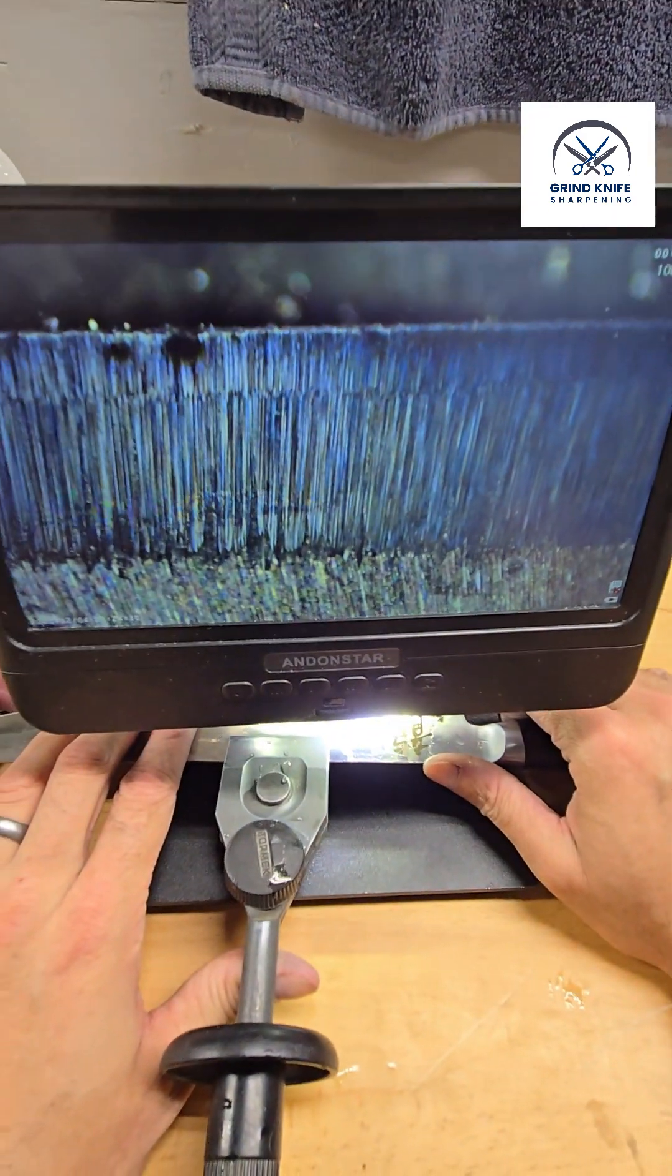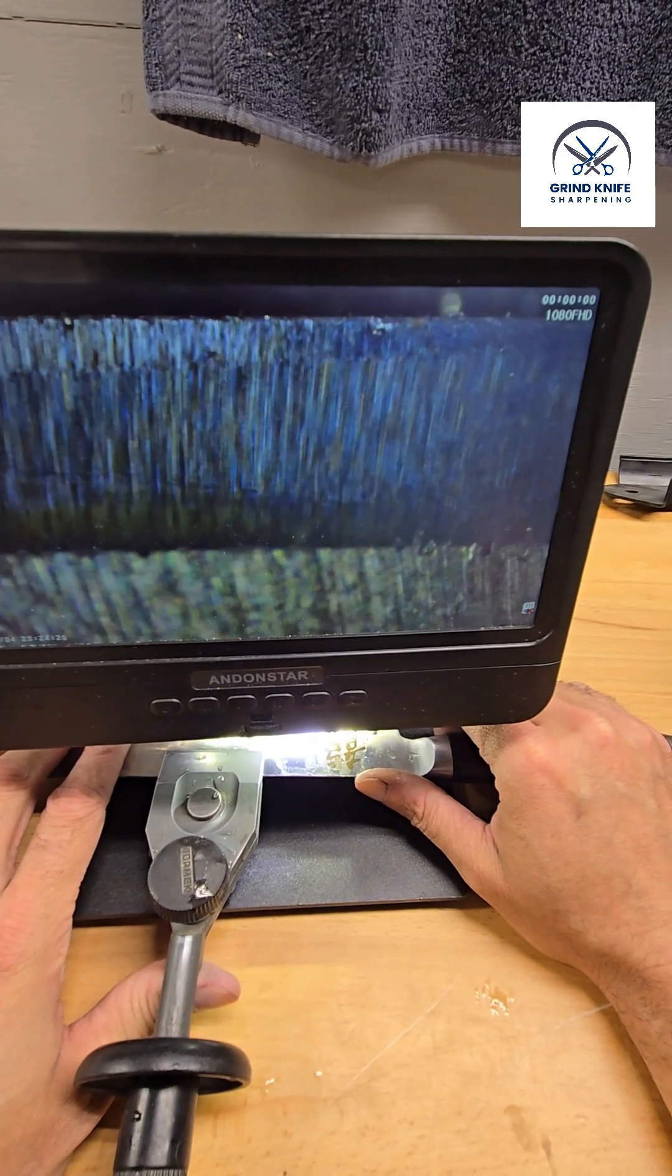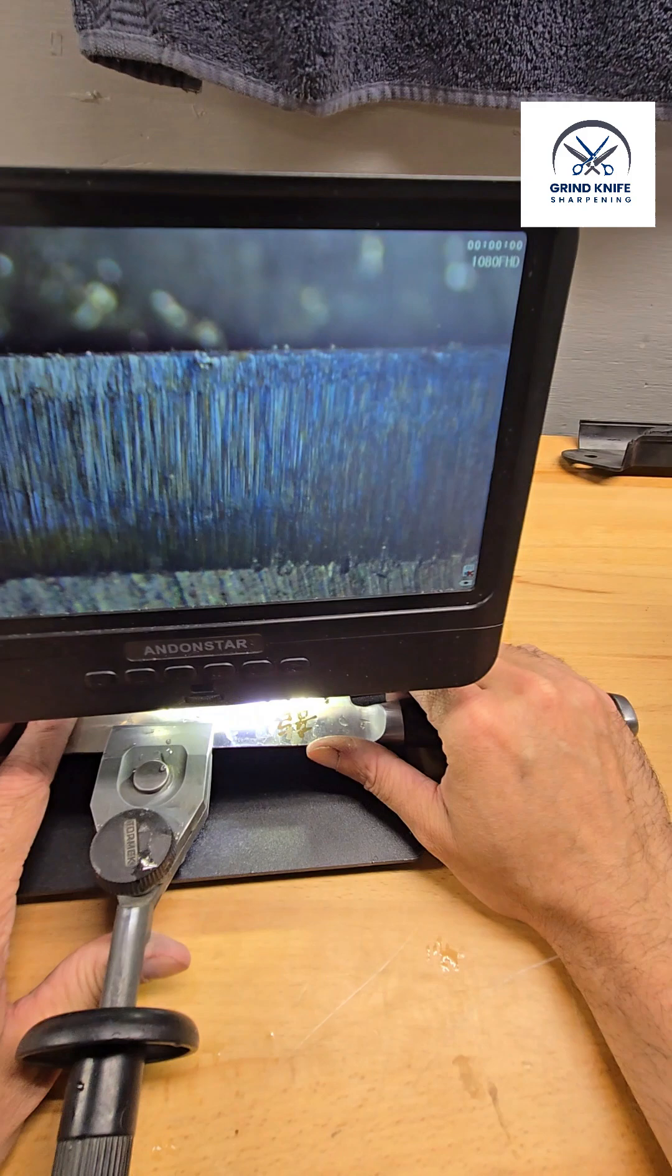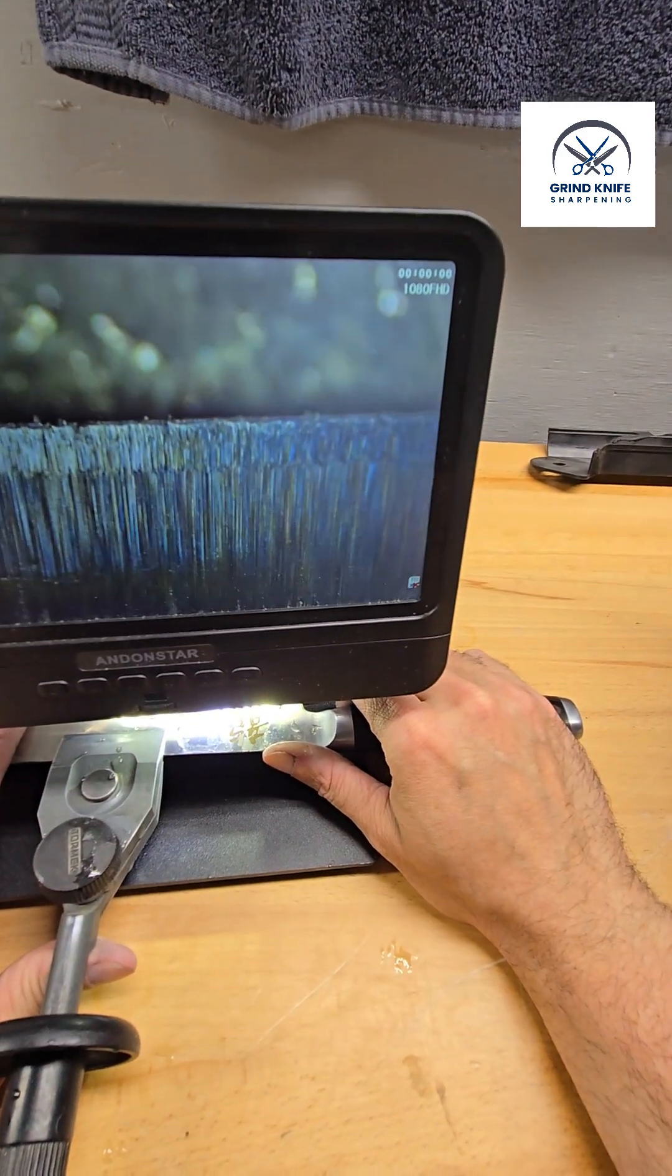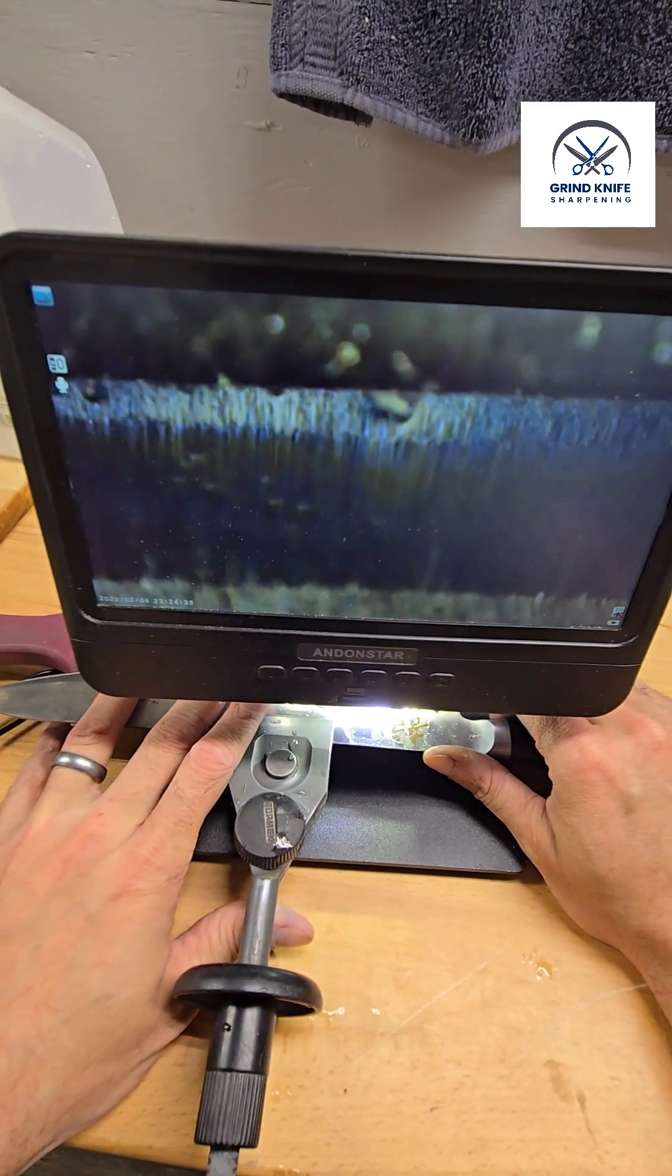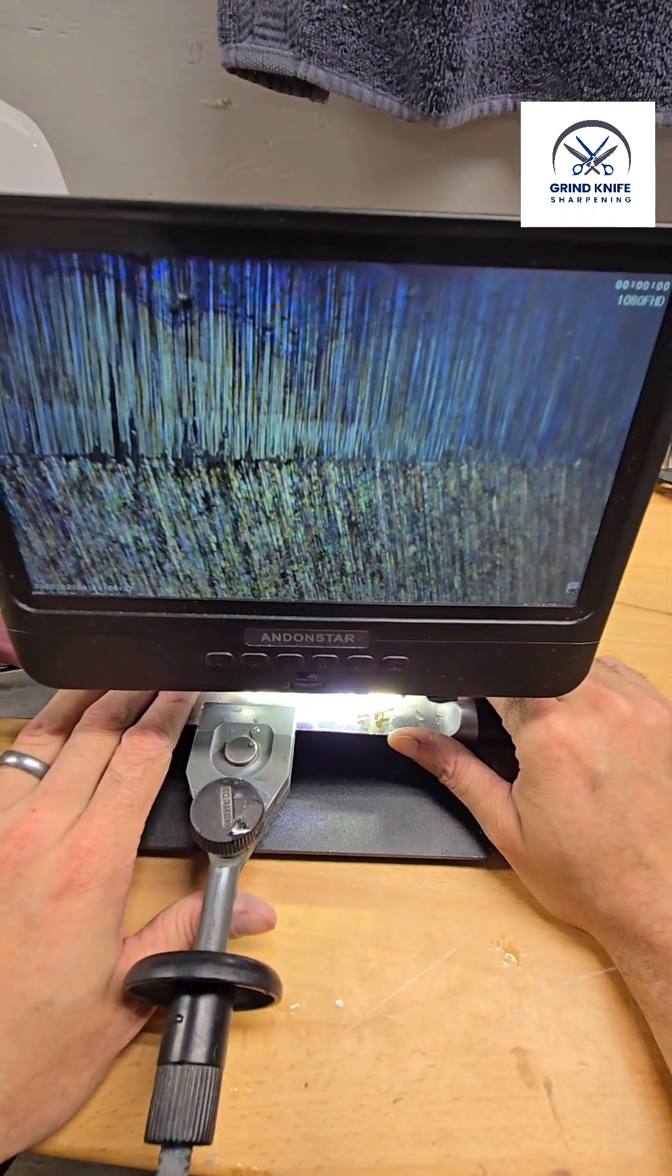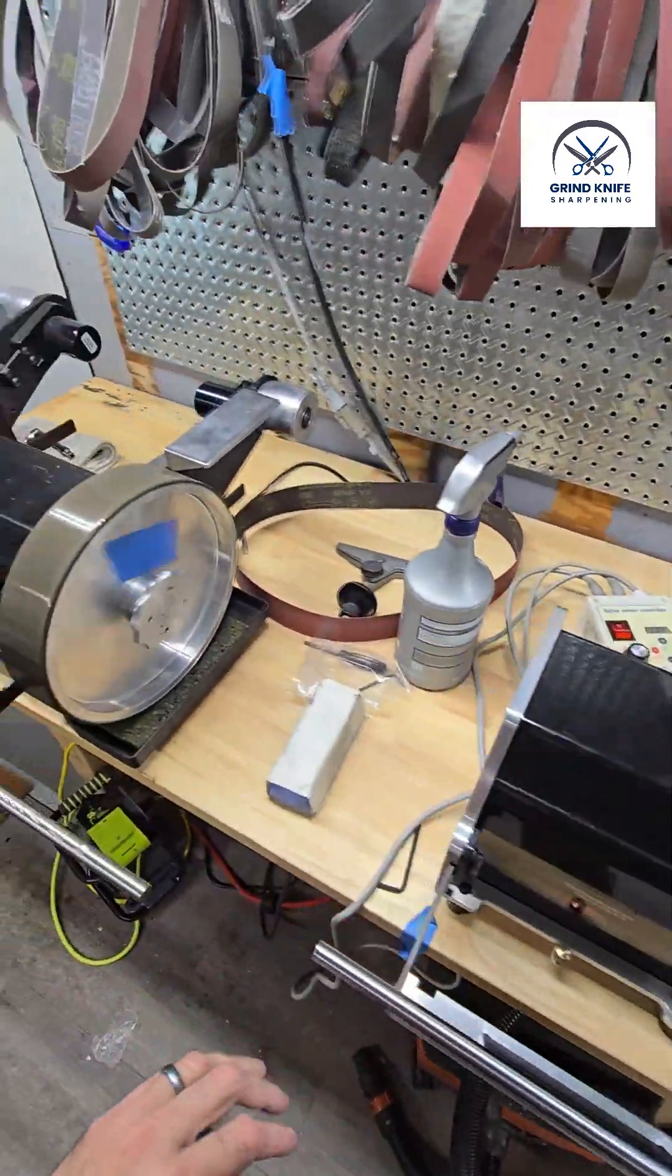There we have it. We have removed essentially all of those 100 grit scratches in just a couple of seconds. So there's no need for a tighter grit progression than that. You know, some of that's water droplets and stuff, but there's no need for a tighter grit progression.